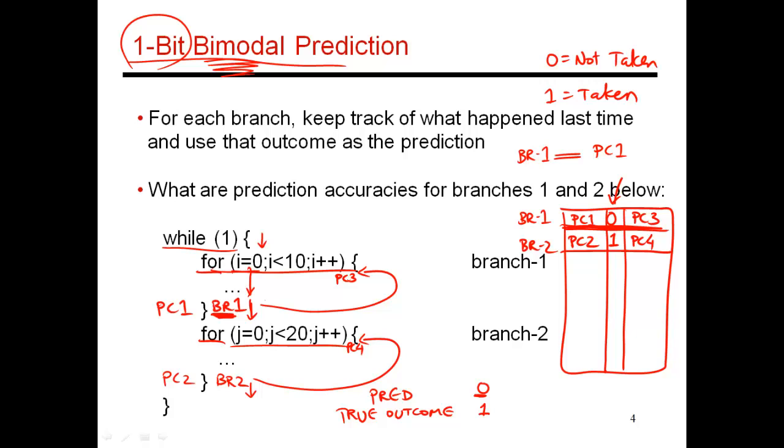So this is an example where the predictor is wrong. But now having made this wrong prediction, the branch predictor says, well, let me learn from this behavior. What I have just done is the branch has been taken. So let me make that my new prediction. So the 0 gets changed to a 1.